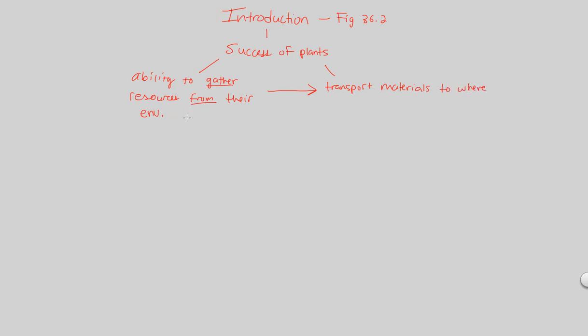So a plant can get those materials from their environment and then you have to transport them to where they are needed. And that will give you a successful plant.